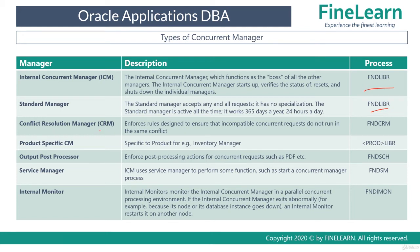There is something called CRM, that is the Conflict Resolution Manager — do not confuse this with Customer Relationship Management. As the name suggests, it checks for incompatible requests. For example, if concurrent program A is running and program B is defined as incompatible with A, then if A is already running and another user submits B, the CRM checks for incompatibilities first and will not allow B to run until A is complete. In a previous lesson we already saw where incompatibilities are defined in the Concurrent Program Define form.